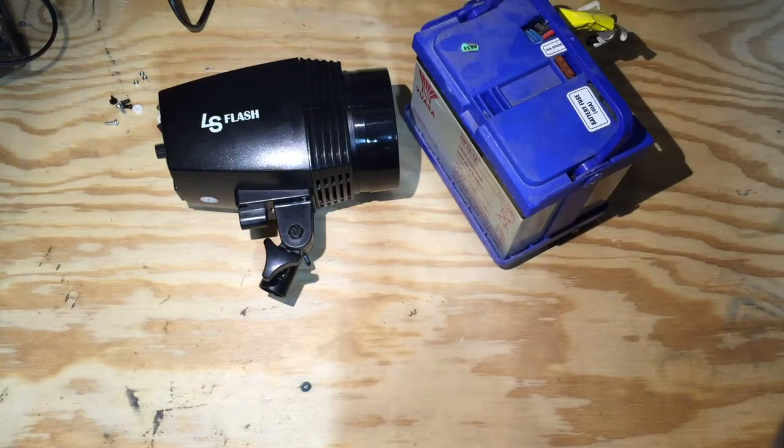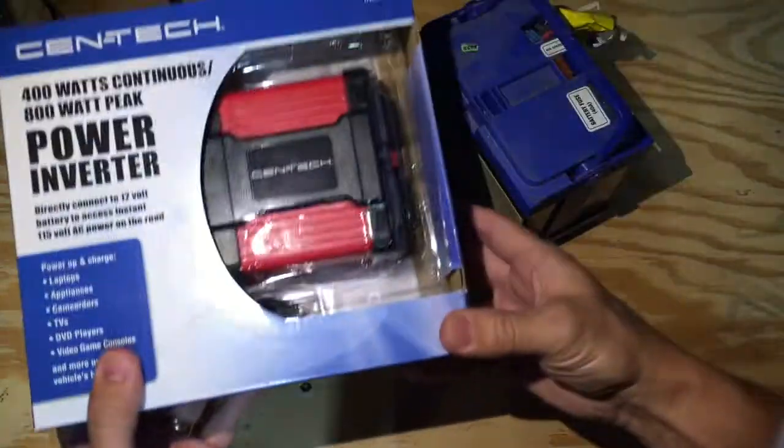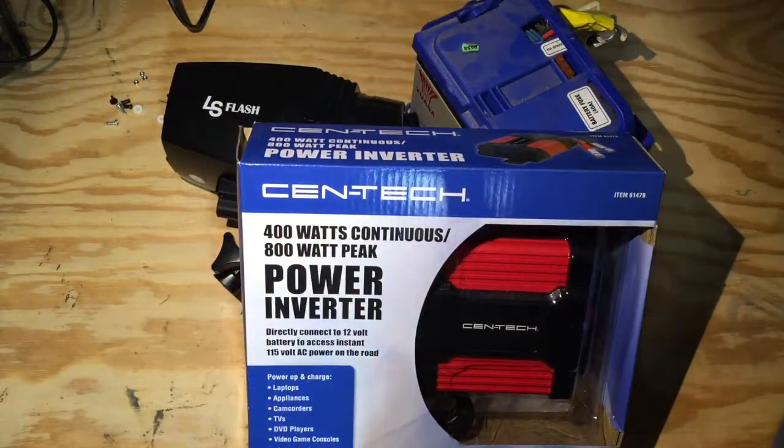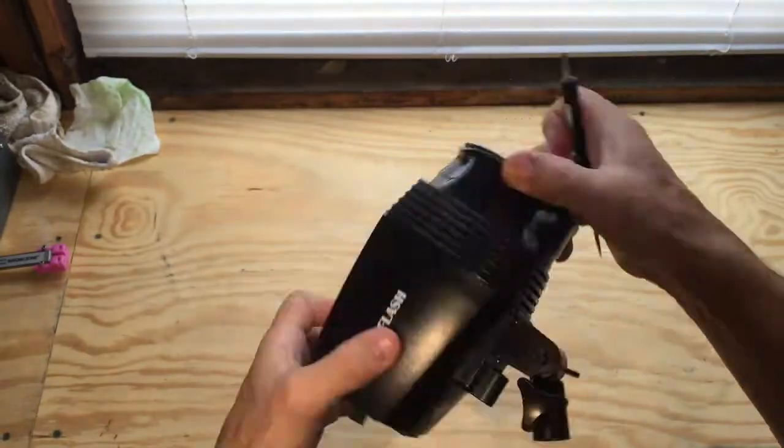If you want to buy a monolight strobe that will work on location without grid power, it can run you anywhere from three hundred dollars to a thousand or even more.